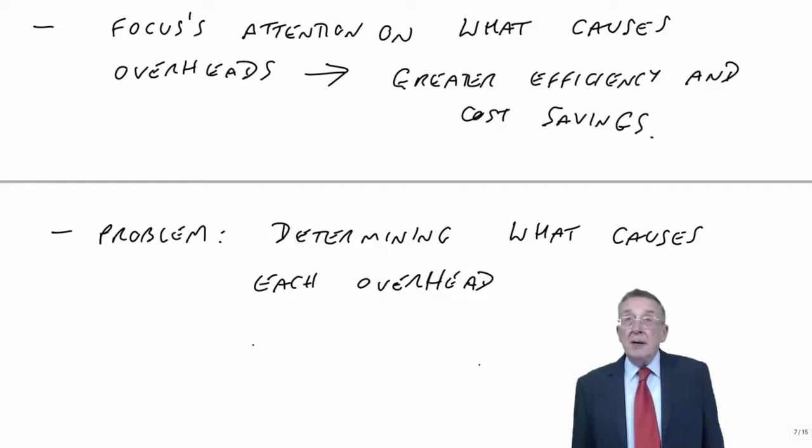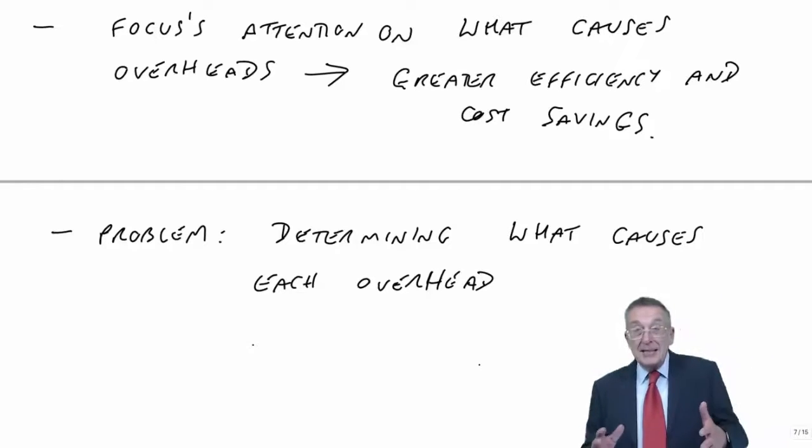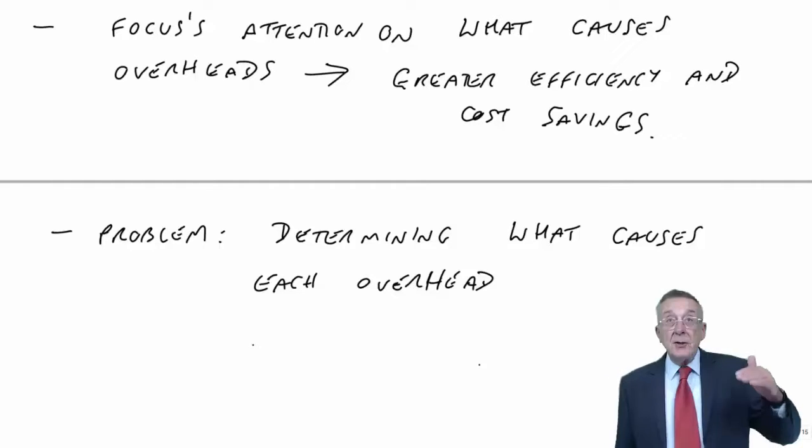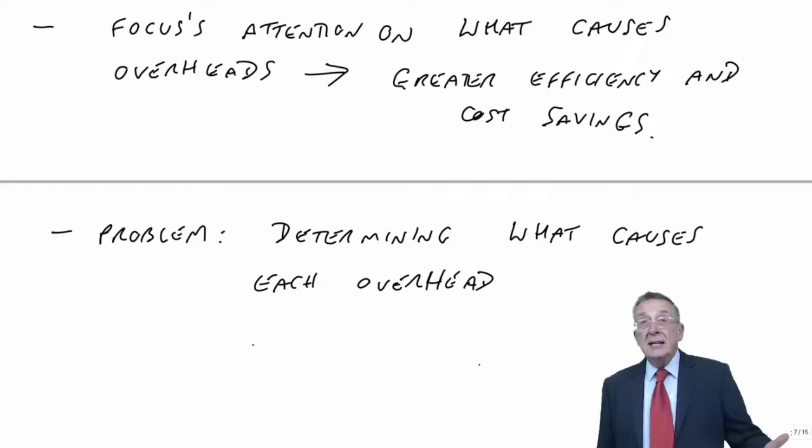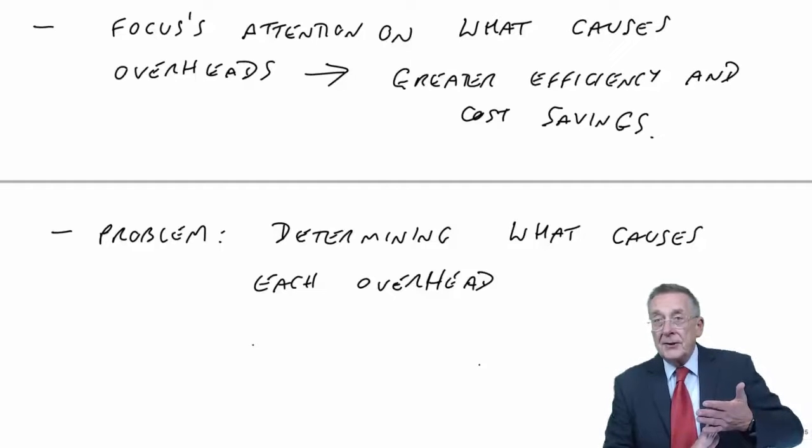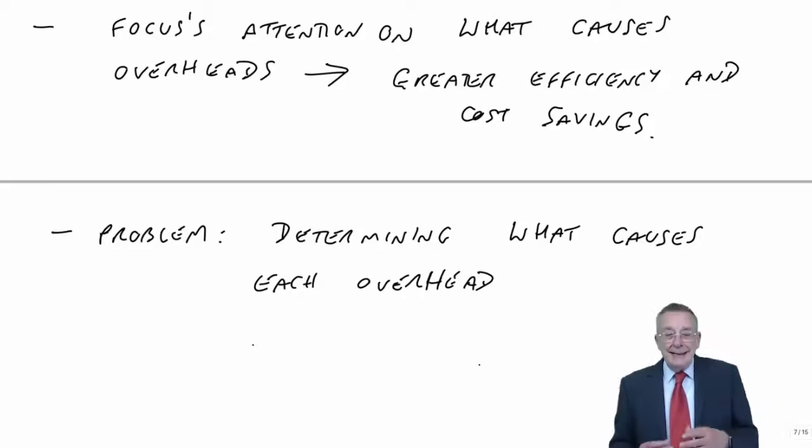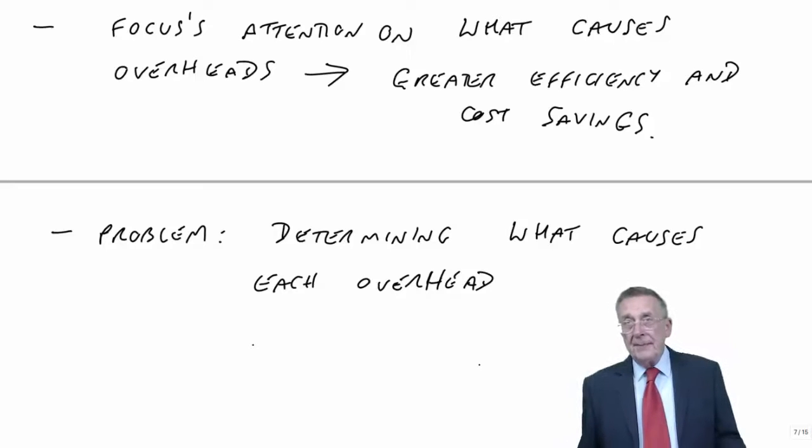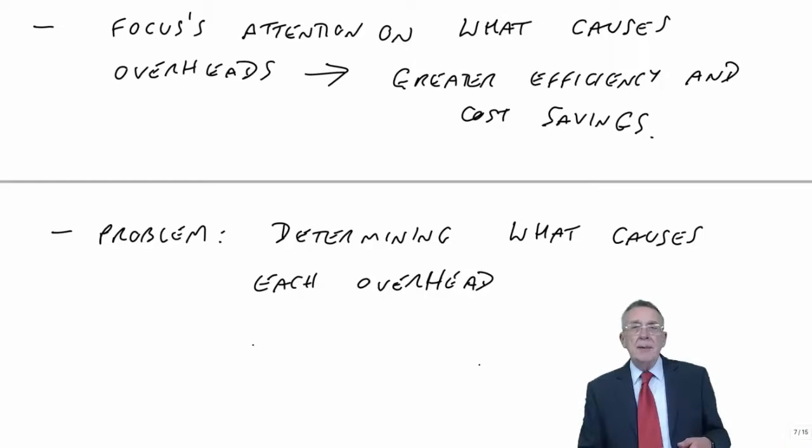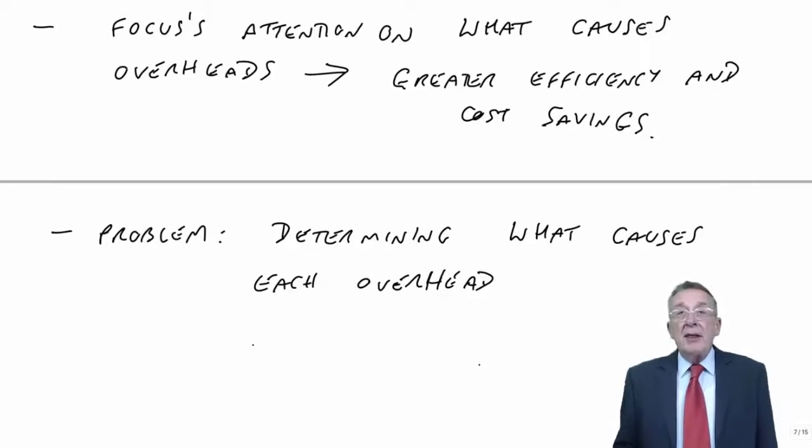There are likely to be some overheads where there just is no ideal cause. And so what a lot of companies do in fact is use activity-based where there is a sensible cause we can find, like number of setups or machine hours, but any remaining overheads where we just can't find a sensible driver, those perhaps have just been absorbed using traditional absorption costing. So things like rent of factory maybe they'll just do in total cost per labour hour or cost per machine hour at this point, rather than wasting time when there are no figures to be found.